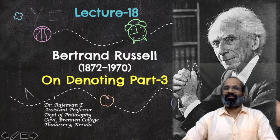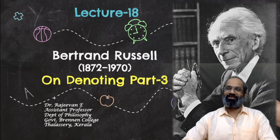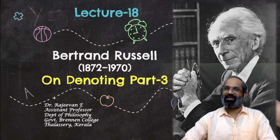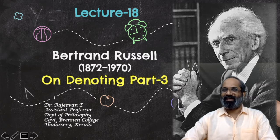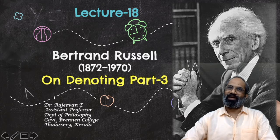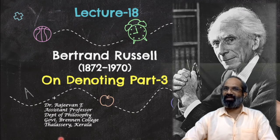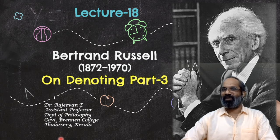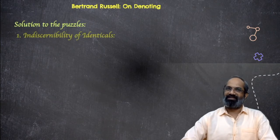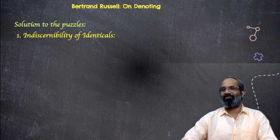Hello, welcome back. In the previous class on denoting, we have seen Russell's theory, which claims that there are two claims for an indefinite description and three claims for a definite description. In today's class, we are going to apply this theory in the case of the puzzles — the puzzle about indiscernibility of identicals, that of the breach of the law of excluded middle, and also that of negative existentials. We will pick up the puzzles one by one and apply the theory, testing it for its success. Russell claims that a theory can be tested for its reliability when applied to puzzles, and that is exactly what we are going to do in today's class.